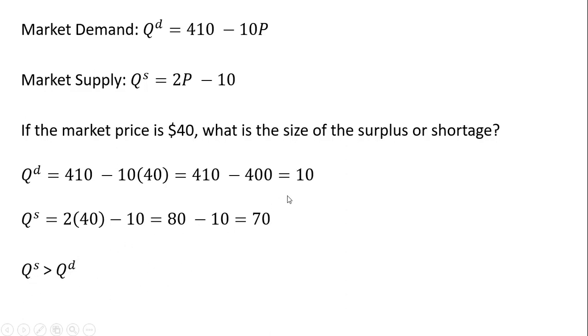70 minus 10. Sellers are going to try to sell a lot more units than buyers are interested in buying at this high price of $40. And so we have a surplus. 70 minus 10. Sellers are only going to be able to sell 10 units out of the 70 that they're bringing to the market. So there's 60 units here sitting around that no consumers are interested in buying.